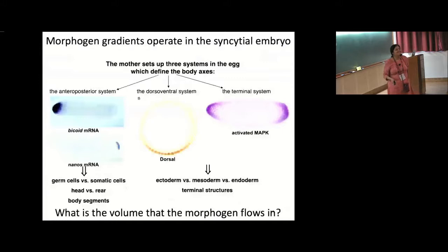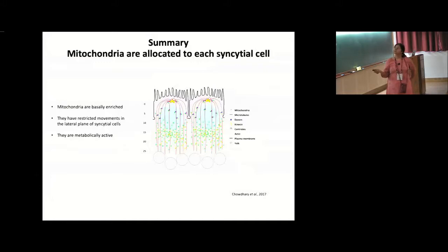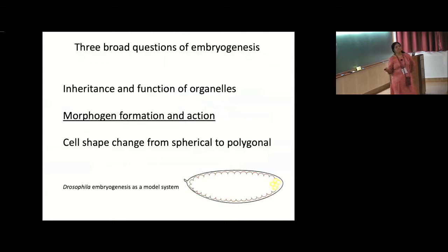The plasma membrane — in the pre-cellularization stage — starts out not flat but with villi. It starts out with just homogenous villi but there is a large membrane reservoir. The entire membrane is convoluted — it has a lot of surface area. What makes it dome-shaped is that this happens only when the nuclei arrive with the centrosomes. In fact, the dome forms even if the centrosomes arrive without the nuclei — the centrosomes by their ability to polymerize microtubules can cause a dome.